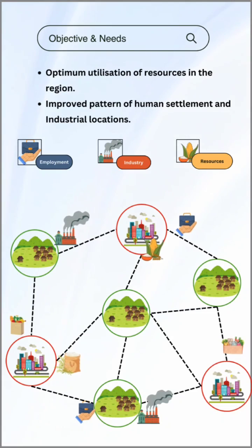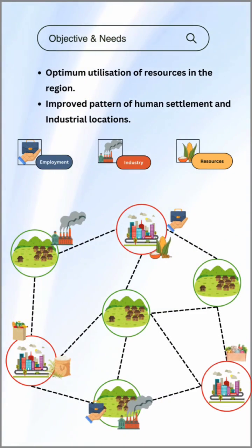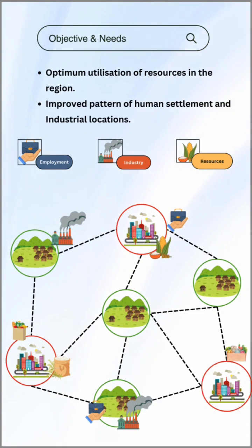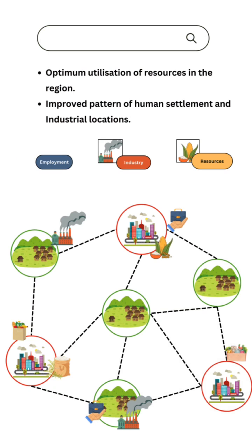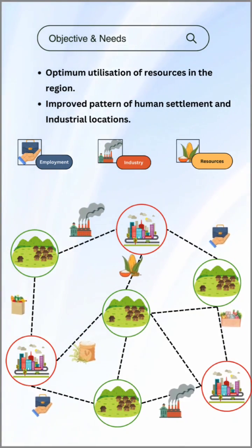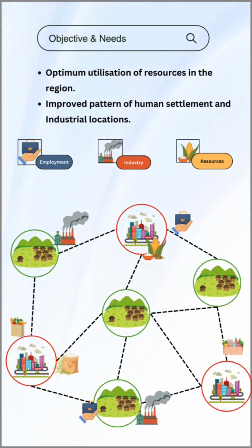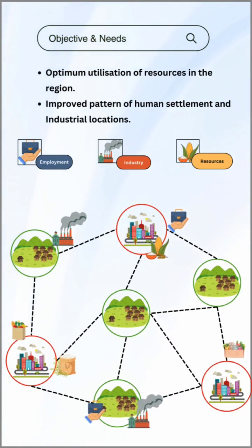Industrial locations involve strategically placing industries to maximize efficiency and minimize negative impacts on the environment and communities. As you can see, rural areas can supply raw materials like grain, animal livestock, and other resources to urban factories and industries to improve production and quality.